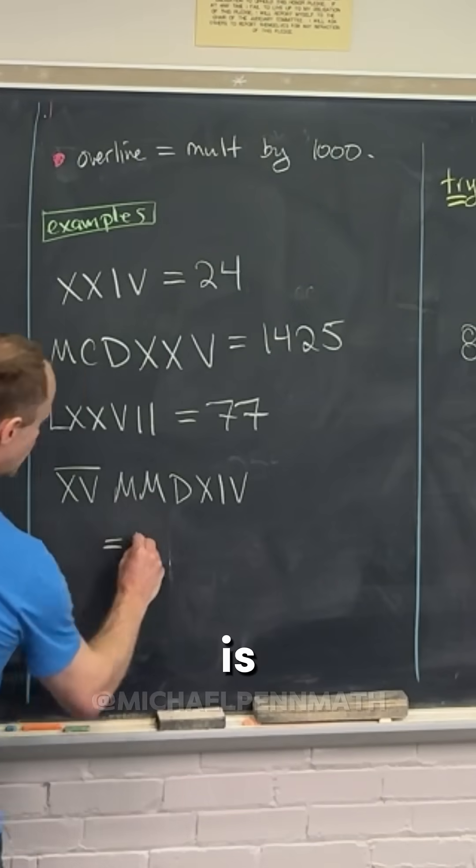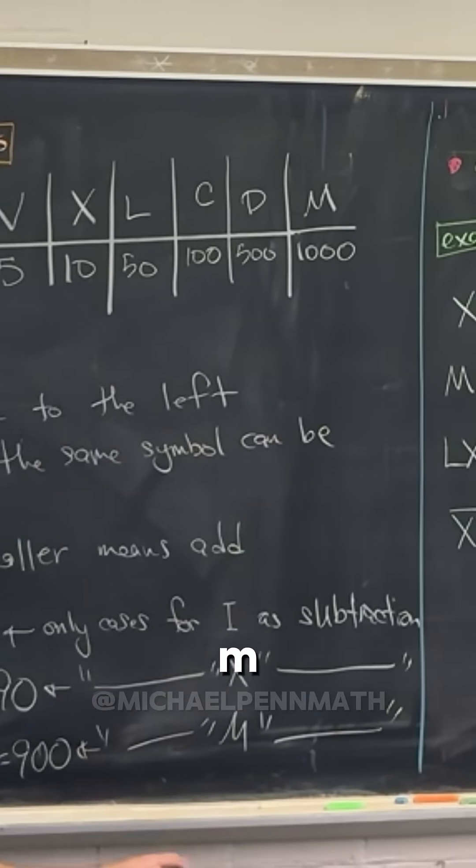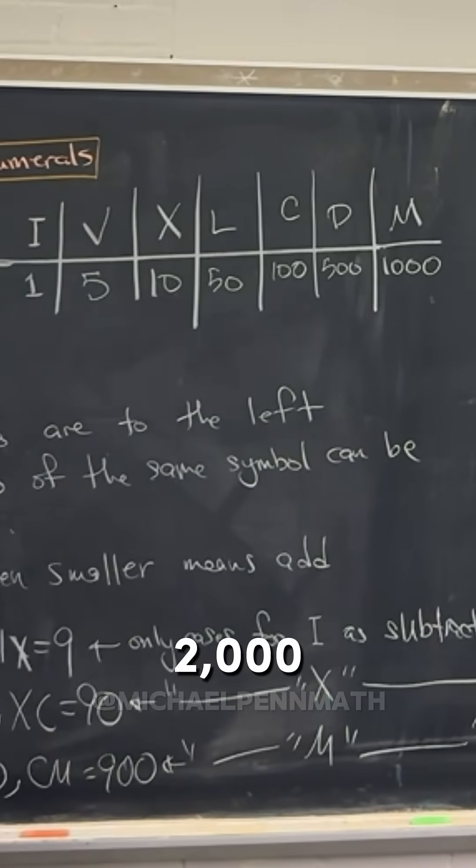Oh, and then MM, that's another 2,000, right? So in the end that's going to be 17,000.